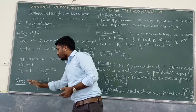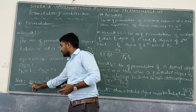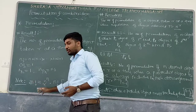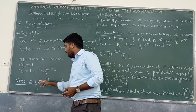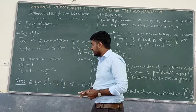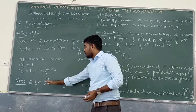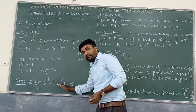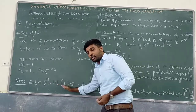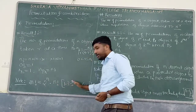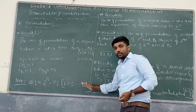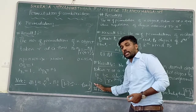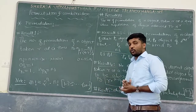One important note about expansion of (2n) factorial: (2n)! = 2 to the power n, into n factorial, into 1 × 3 × 5 × ... up to (2n minus 1).